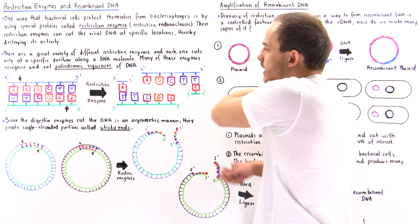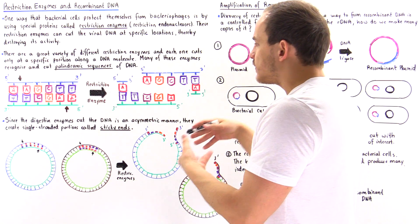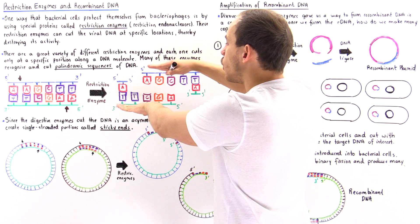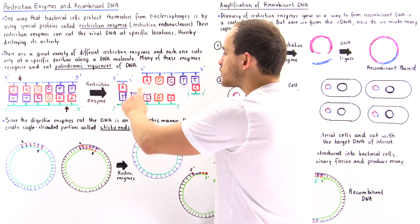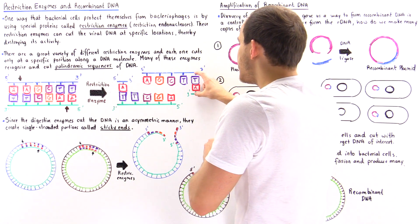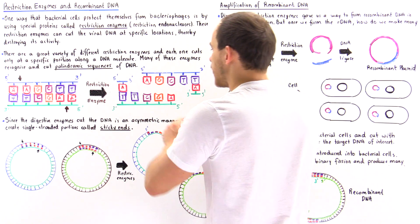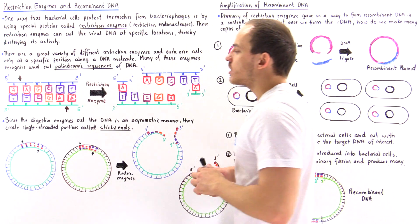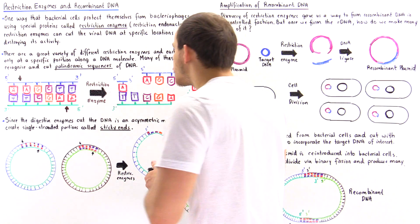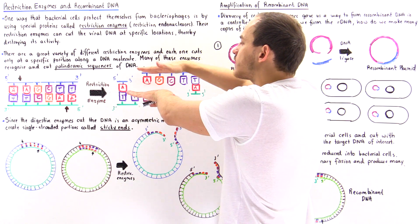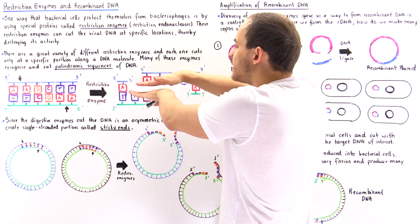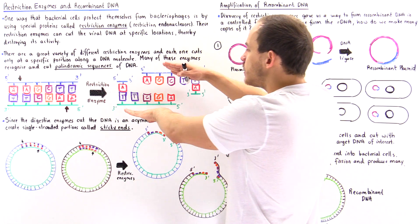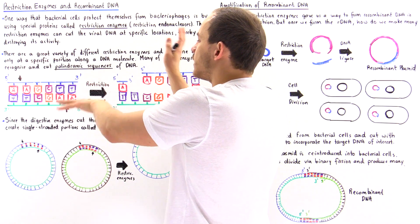Now we basically have this asymmetric, uneven cut. The reason we have an asymmetric cut is that these single strands of the DNA molecule are now exposed — they're no longer connected, but they are exposed. Here we still have a double helix on each end, but within these middle sections we have single strands that are exposed. These single strands are commonly known as sticky ends. We call them sticky ends because they're complementary with respect to one another, and if we allow them to reconnect and use a special enzyme to reform these bonds, these sticky ends — because they're complementary — are going to stick right back together.